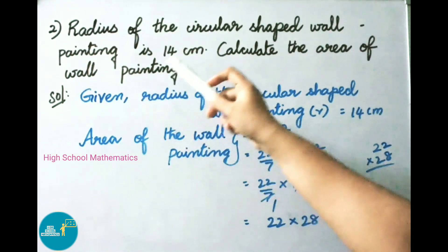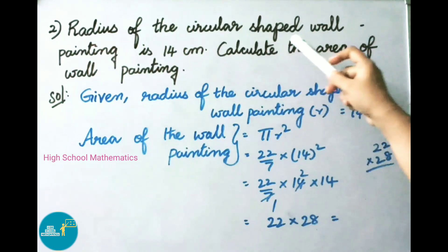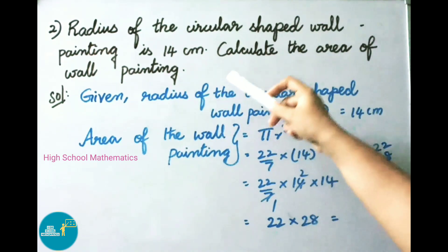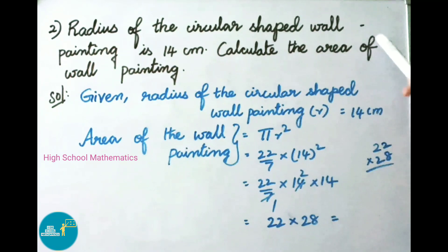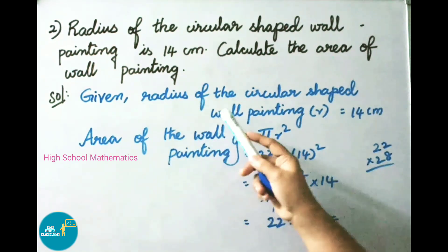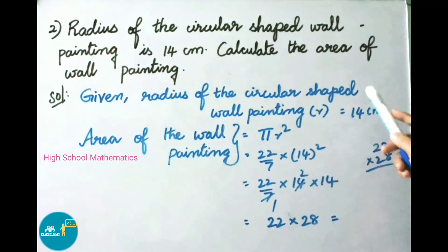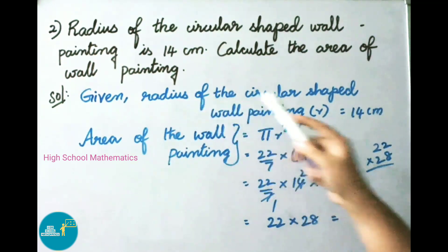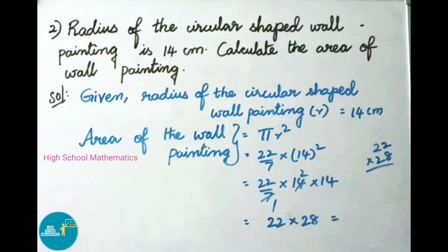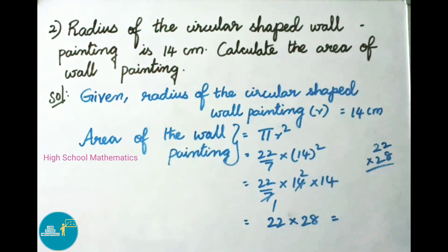See now question number 2. The radius of the circular shaped wall painting is 14 cm. Calculate the area of the wall painting. Let us see the solution. Given: radius of the circular shaped wall painting is 14 cm. Here radius is denoted with small r, therefore r equals 14 cm.